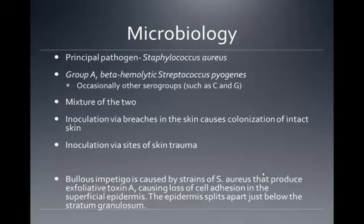Inoculation occurs via breaches in the skin that cause colonization of intact skin, or inoculation via sites of skin trauma. Bullous impetigo is caused by strains of Staph aureus that produce exfoliative toxin A, which causes a loss of cell adhesion in the superficial epidermis. The epidermis splits apart just below the stratum granulosum.